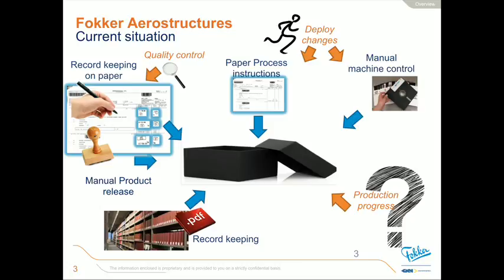In terms of the production process, at some point we don't know exactly what the progress is of a product — not as much as we want. And traceability is a requirement — not just a customer requirement, but also from the authorities. We can do that, but give us some time to find the correct record in some cases.